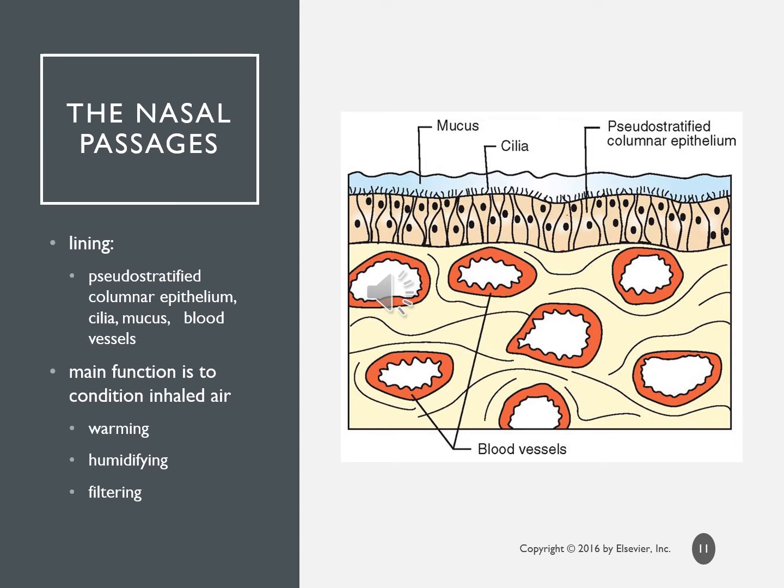The lining of the nasal passages has pseudostratified columnar epithelium, cilia, mucus, and blood vessels. The cilia and mucus trap and deliver foreign material back out — when you cough, the cilia move the mucus containing trapped foreign bodies or irritants back up. The main function is also to warm, humidify, and filter incoming air.